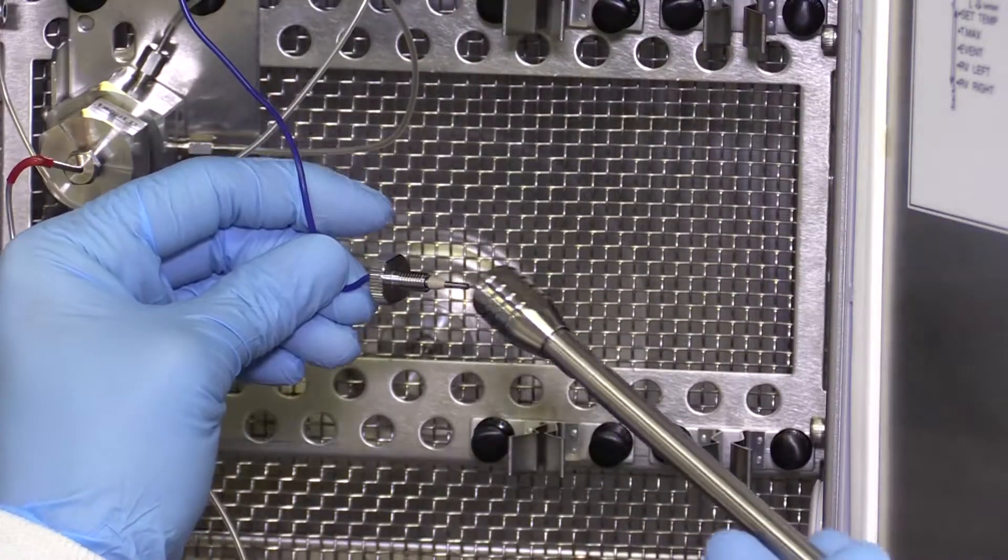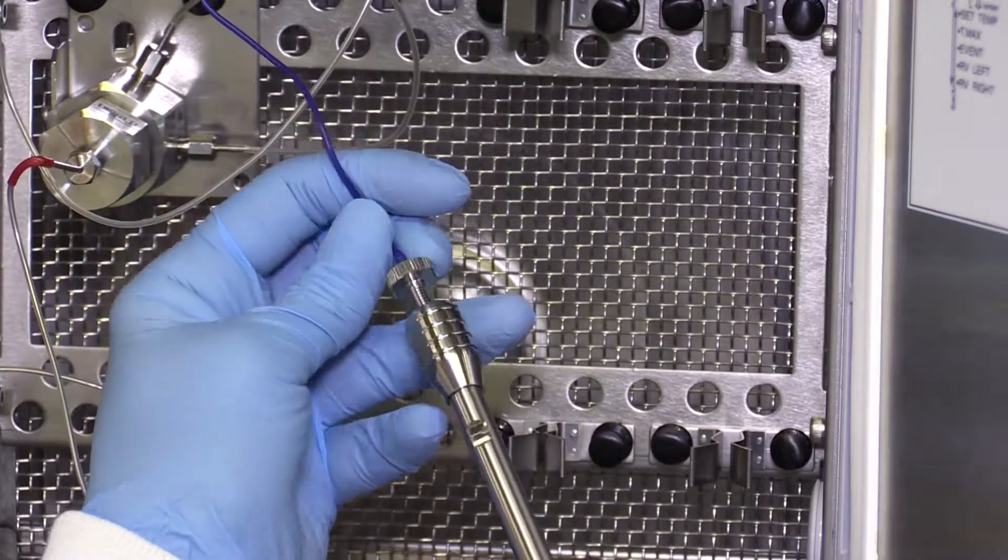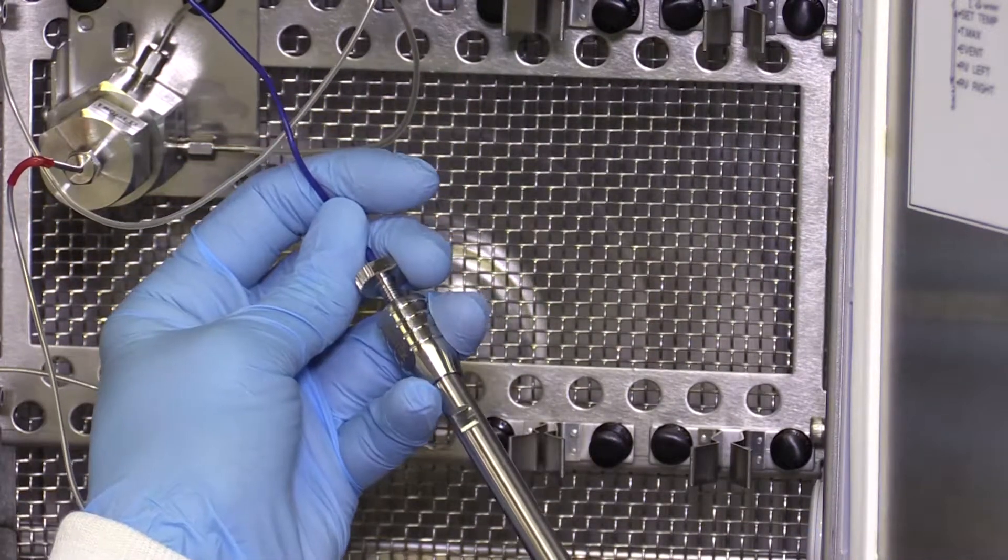Now the way the ferrule works is that the PEEK portion goes into your column port and makes the seal while the metal portion faces the nut.